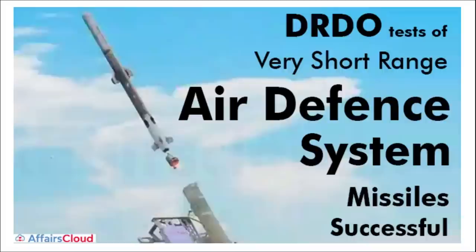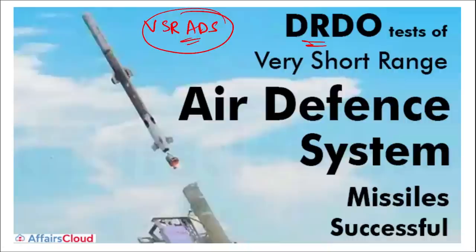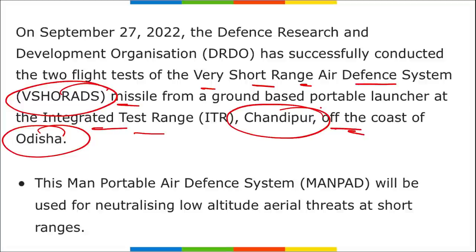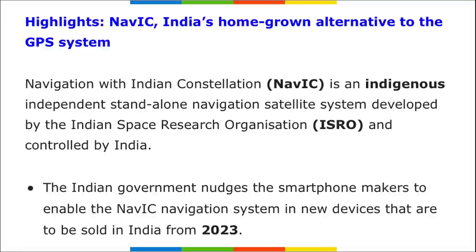DRDO successfully tested a Very Short Range Air Defense System (VSHORADS) missile from a ground-based portable launcher at the Integrated Test Range (ITR) at Chandipur, off the coast of Odisha.